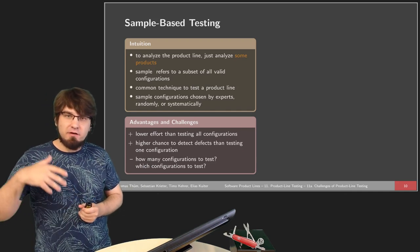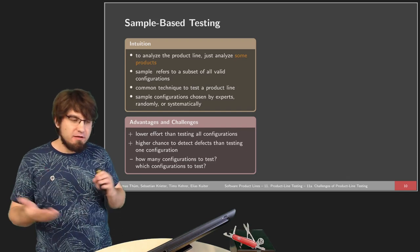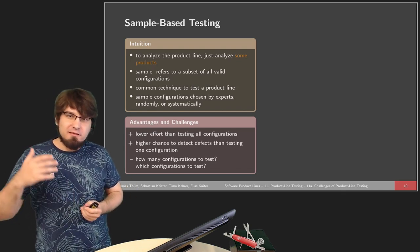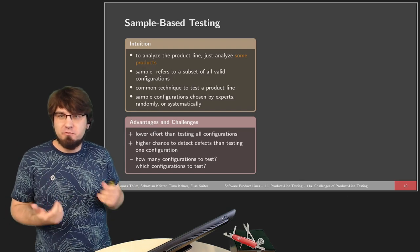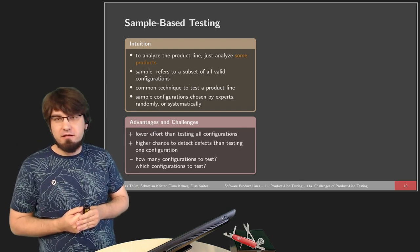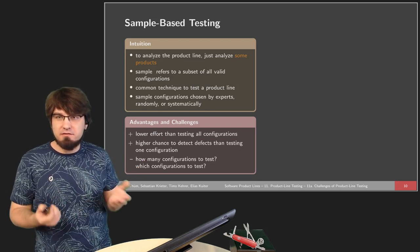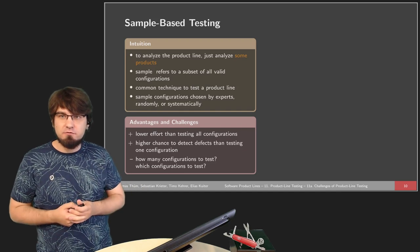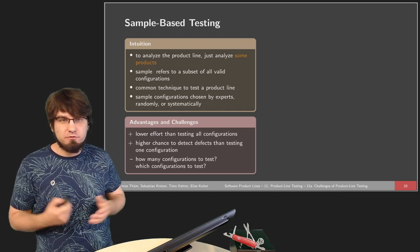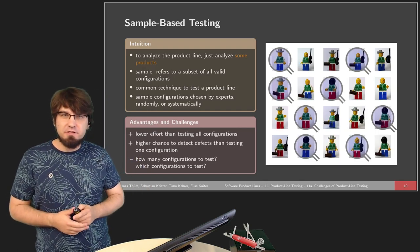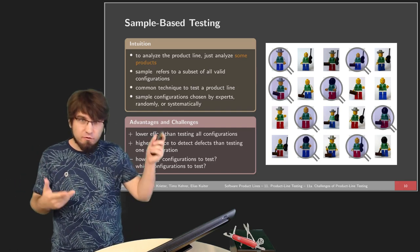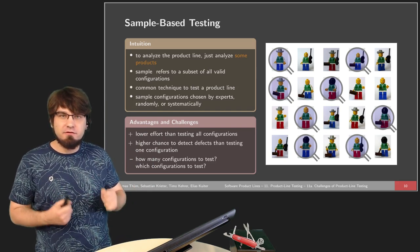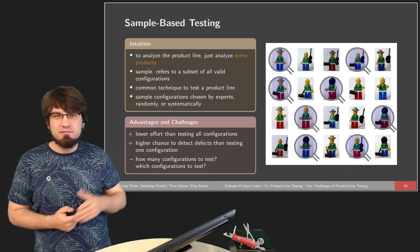A remaining question is: how many configurations should be in the sample, and which ones? Depending on the method chosen — random generation, systematic selection, or expert curation — these questions need to be answered. As an illustration, you can imagine selecting just a few Lego minifigures from a large set for detailed inspection — that's essentially what sampling means for testing product line configurations.